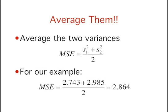We estimate the variance of the two populations by averaging our two sample variances. Thus, our estimate of variance is computed using this formula. MSE is our estimate of the variance of the populations. In this example, MSE equals 2.743 plus 2.985 divided by 2, which equals 2.864.